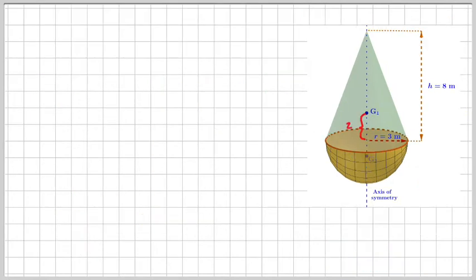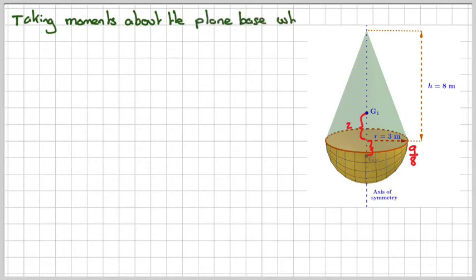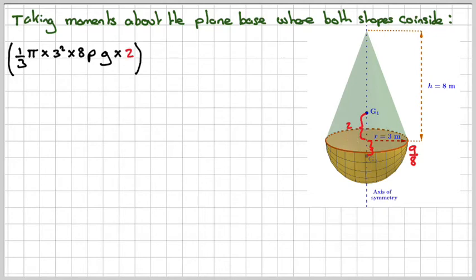So going to this diagram here, what we're going to do now is we're going to take moments about the plane base where both shapes coincide. So that will be one third of pi times three squared times eight rho times g, because the weight of the cone times the distance here which is two, which we just worked out. And then, because this is above where we're taking moments, we're taking moments about this point here around this plane here, so down here will be negative so we'll need to take it away.